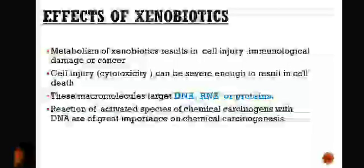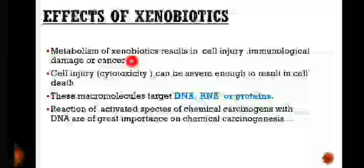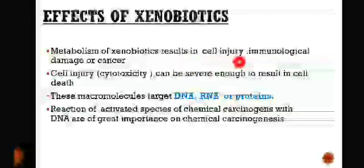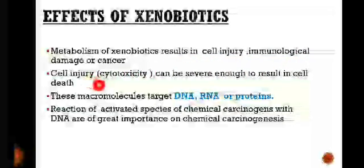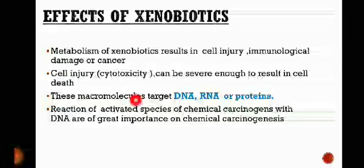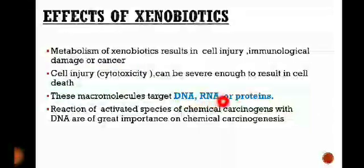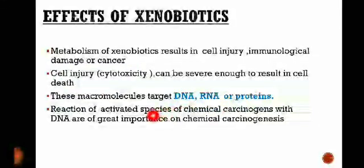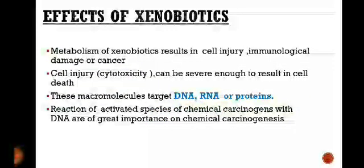Next are the effects of xenobiotics. Metabolism of xenobiotics results in cell injury, immunological damage, or cancer. Cell injury is also known as cytotoxicity, which can be severe enough to result in cell death. These macromolecules target DNA, RNA, and proteins, and reaction of activated species of chemical carcinogens with DNA is of great importance in chemical carcinogenesis. Thank you so much.